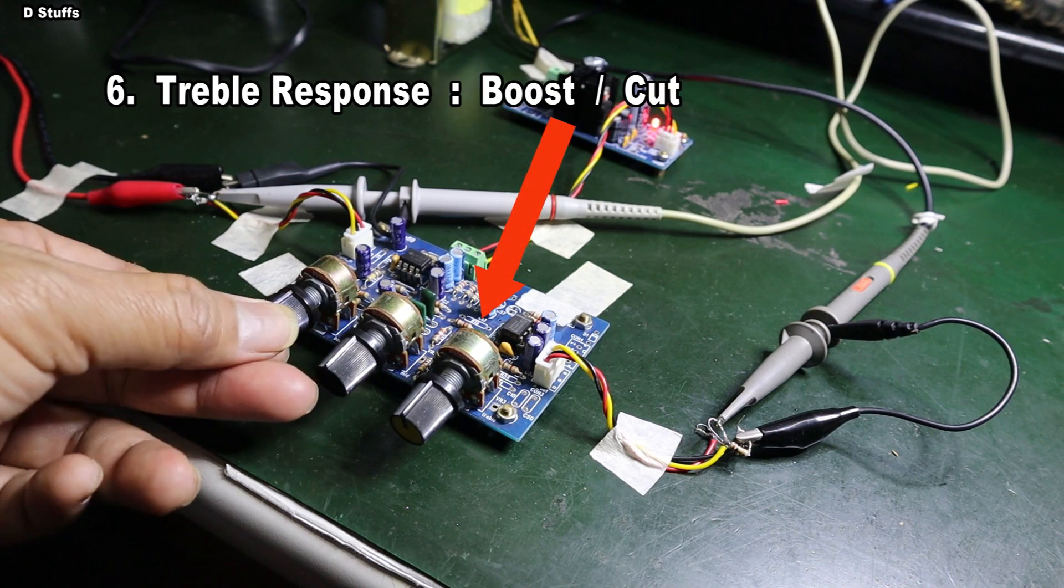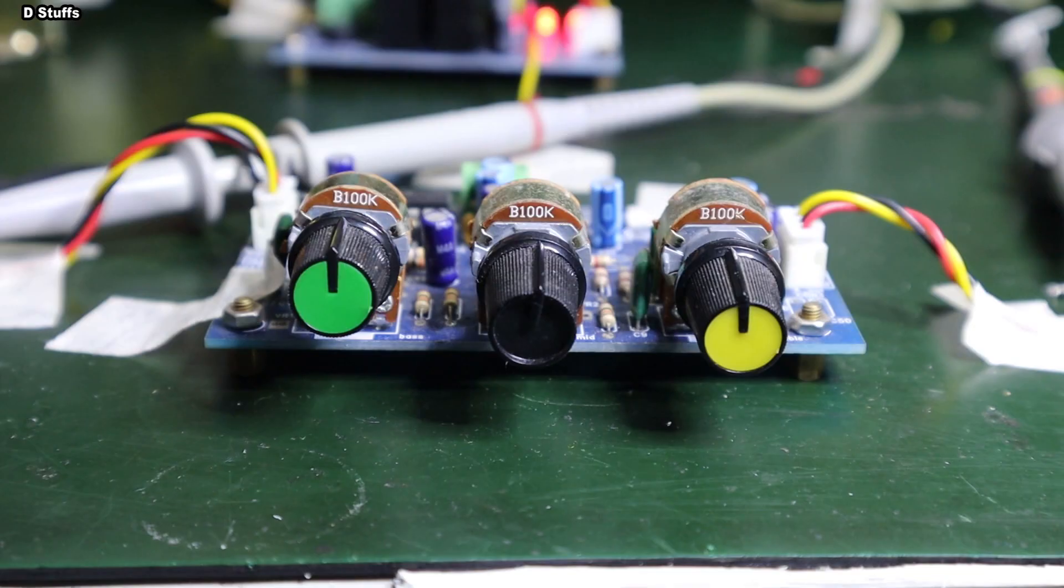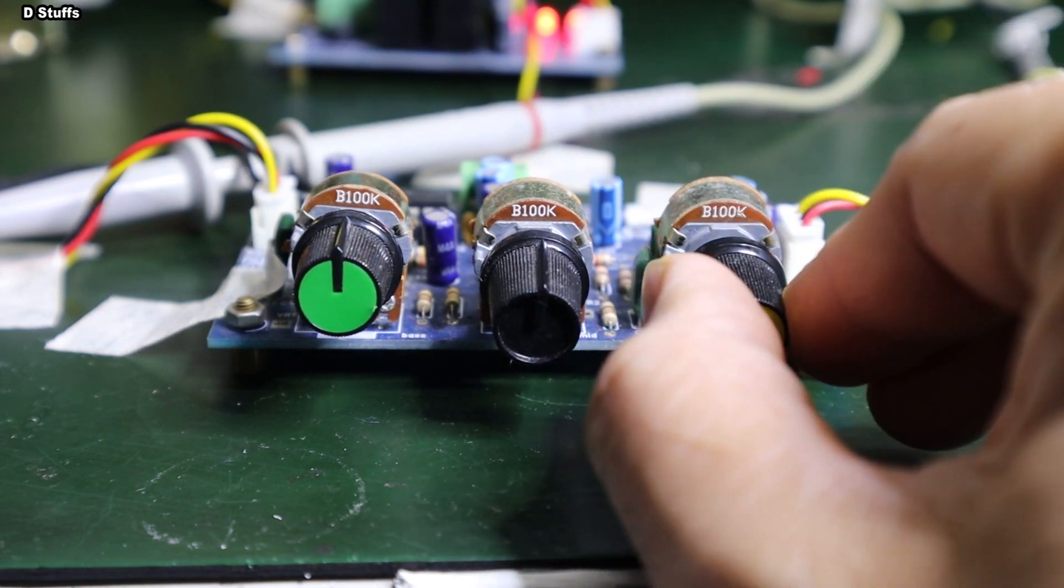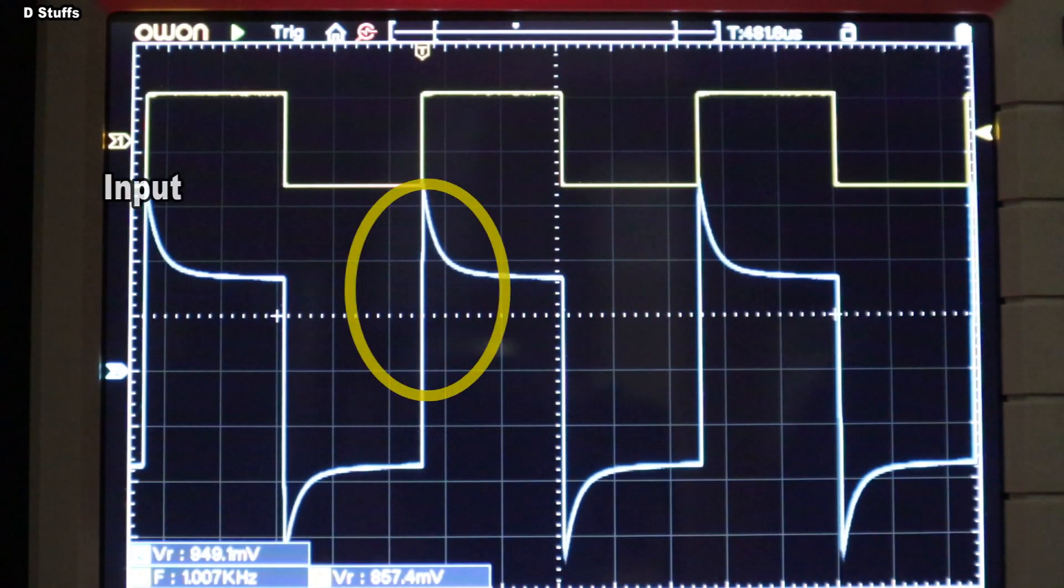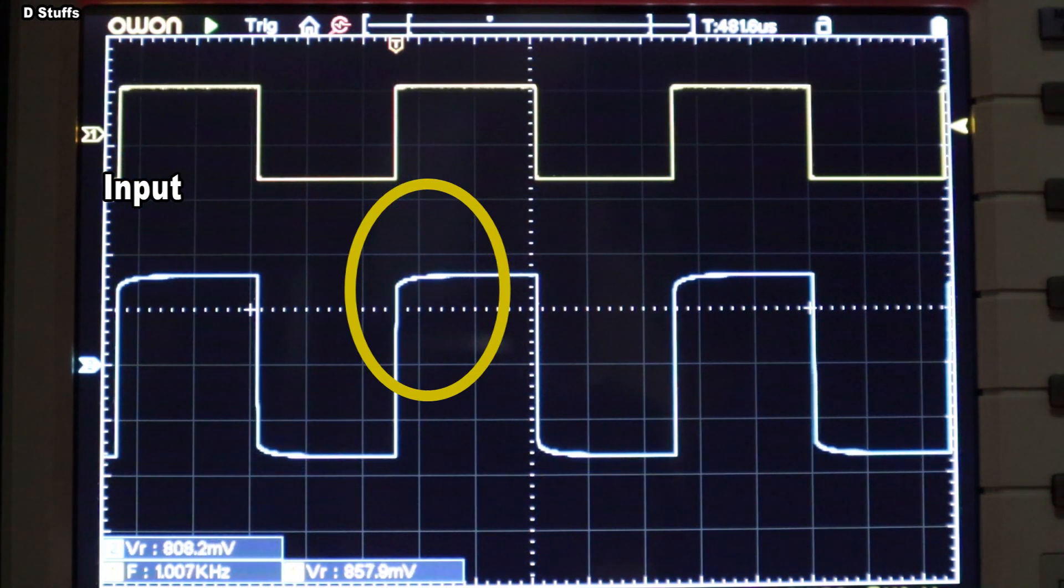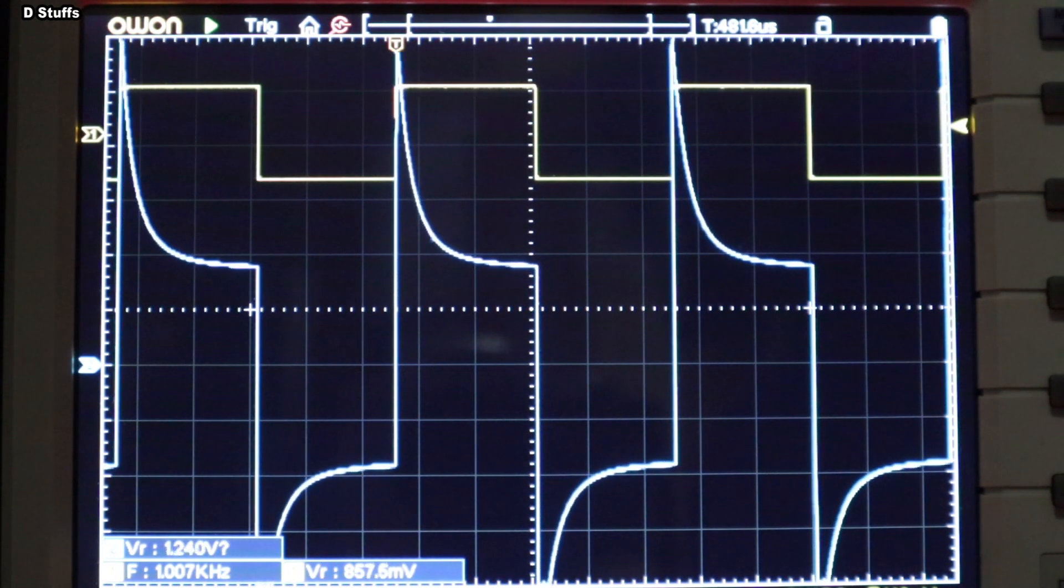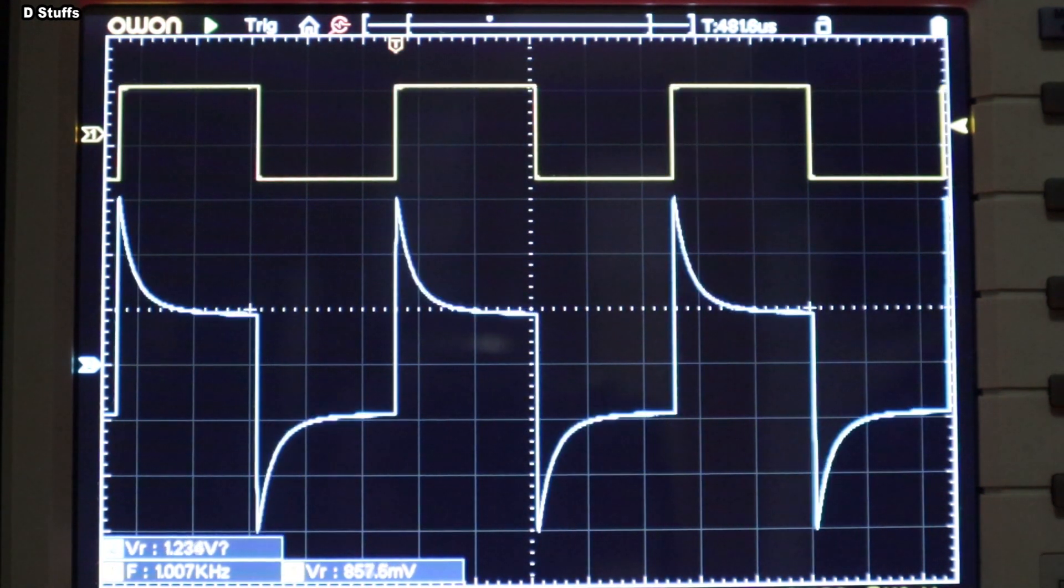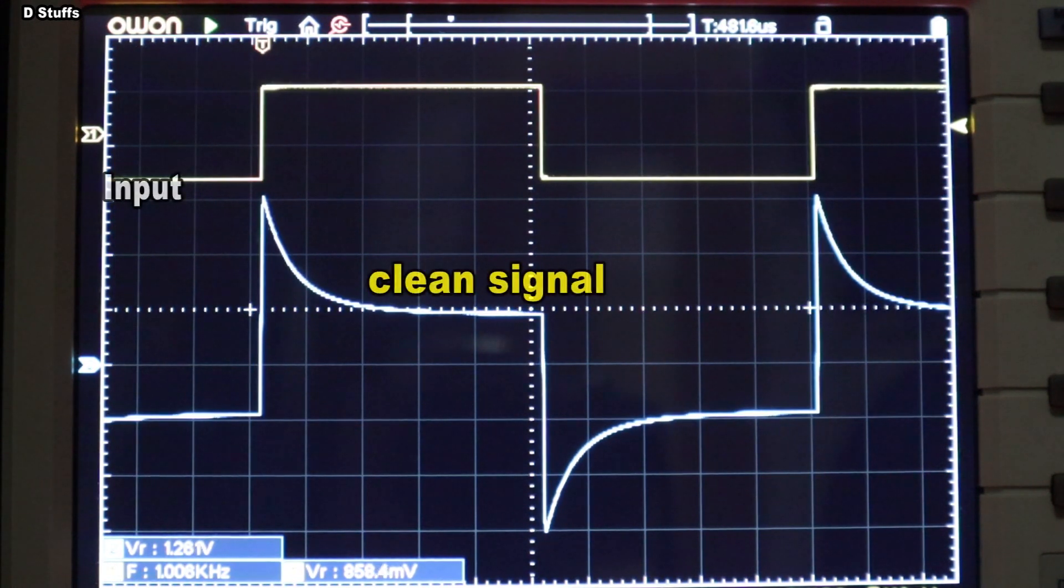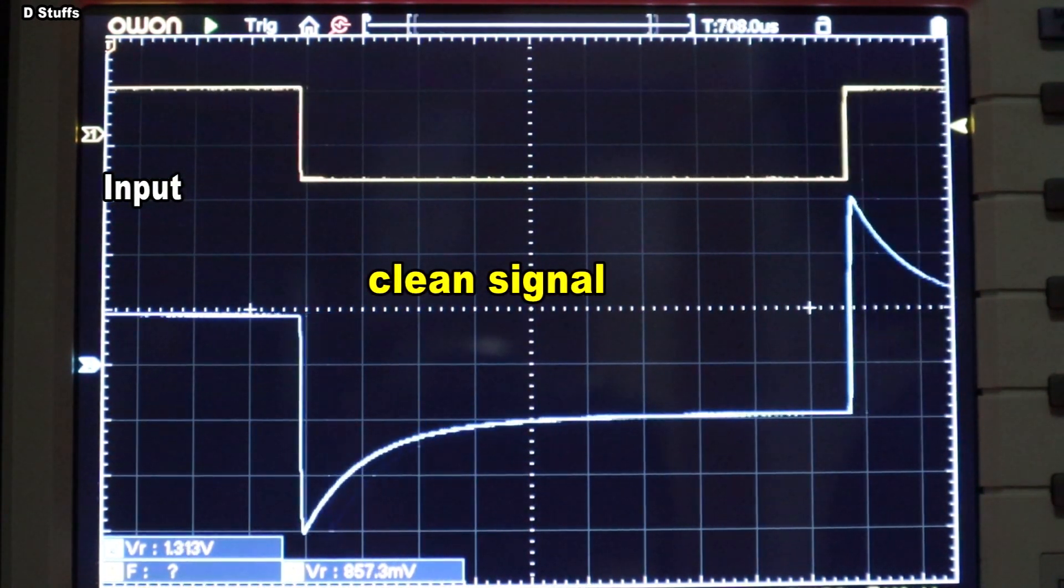Now, let's see the treble control, which is the same method of testing as the bass, but the waveform of interest is now changed to see the rising edge of the square wave, which indicates high frequency. The rising edge of the square wave is located at the left side, which indicates high frequency, and the low frequency is on the falling edge, which is on the right side of the square wave.